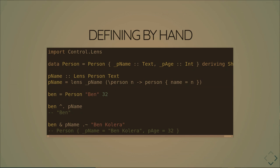We can define a test person called Ben. We can use the `view` operator — we take our target record, view with the `pName` lens, and if we run that we get back the string we're expecting. We can also use this lens to set: using the `pName` lens, set the target with the string 'Ben Clear', then apply it to our test person. This returns the record with the updated name, not changing the age at all.